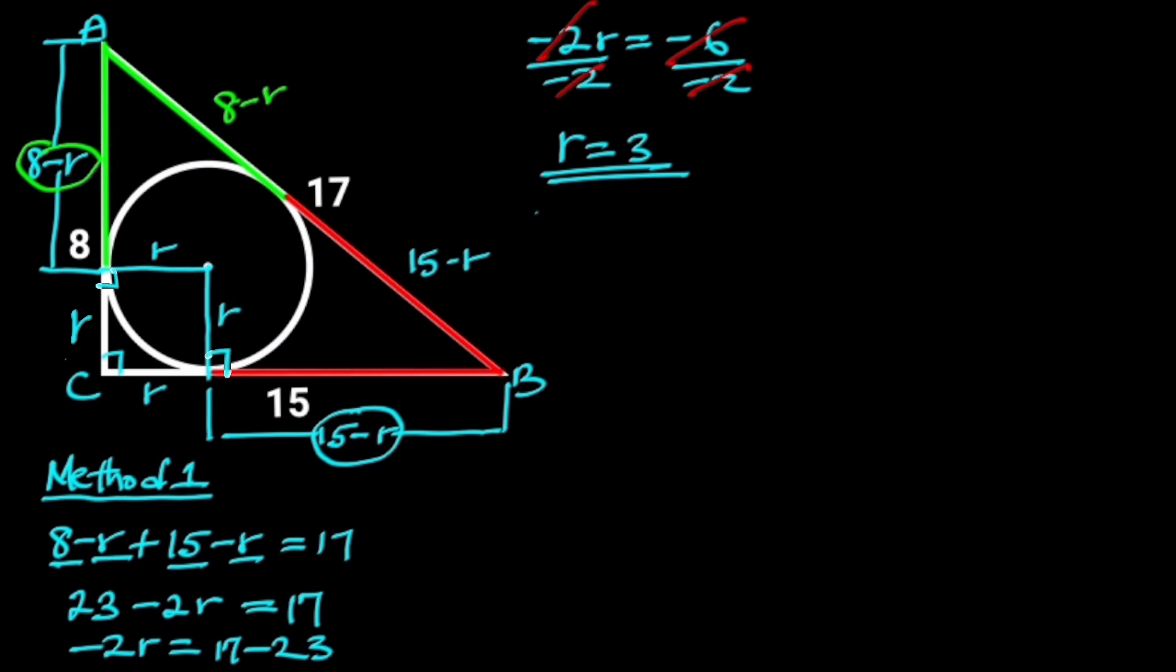Now we have the radius of the circle as 3 units. Let's go ahead and find the area of the circle. The area of a circle is given as pi R squared. If we plug in the value of R in this formula, we will have area is equal to pi times 3 squared. 3 squared is 9. Hence, the area is 9 pi square units.